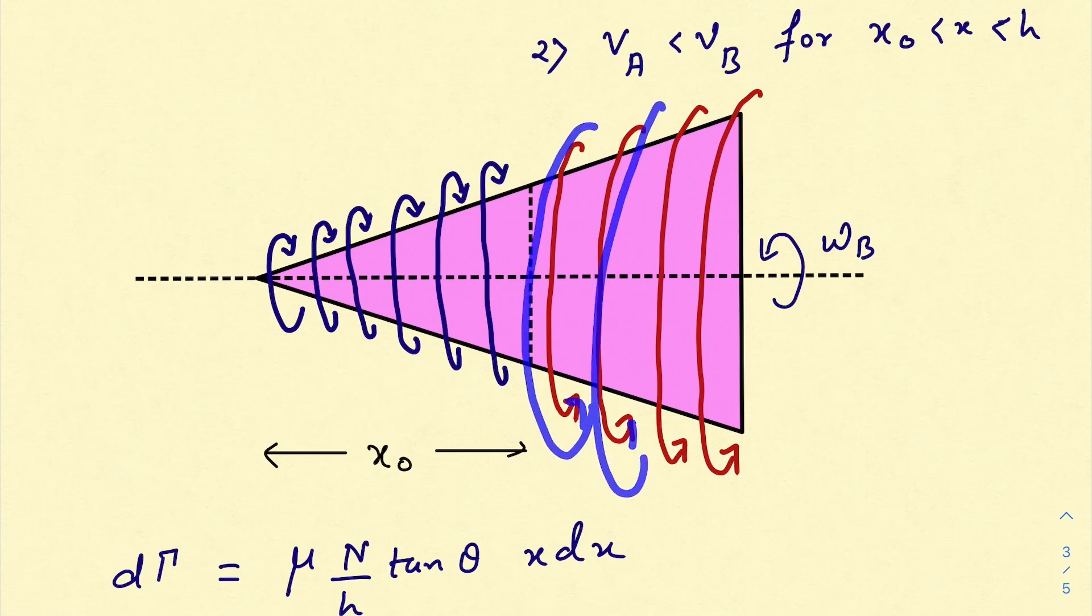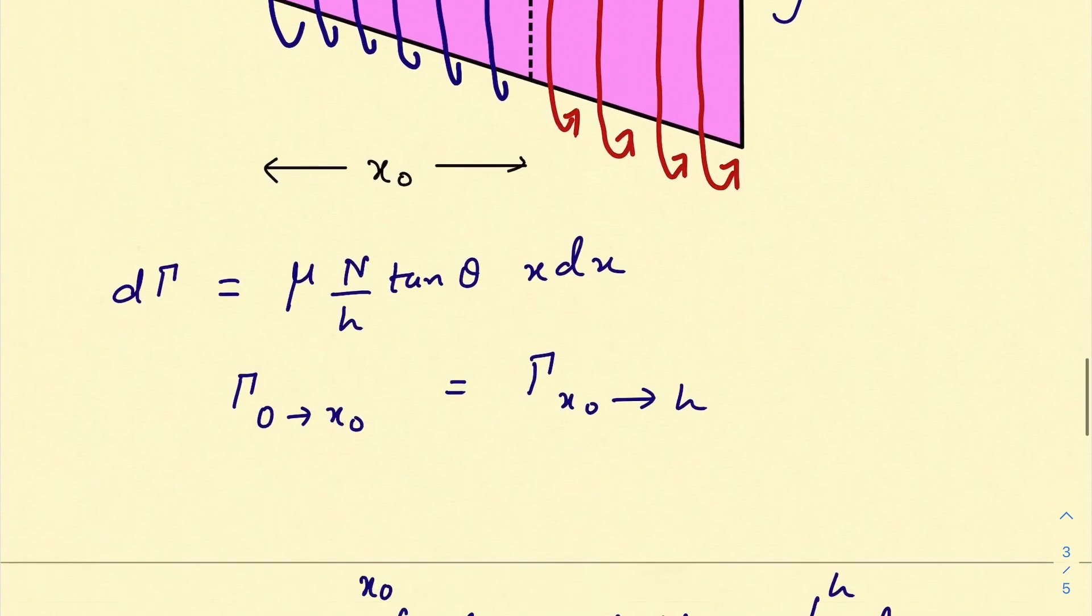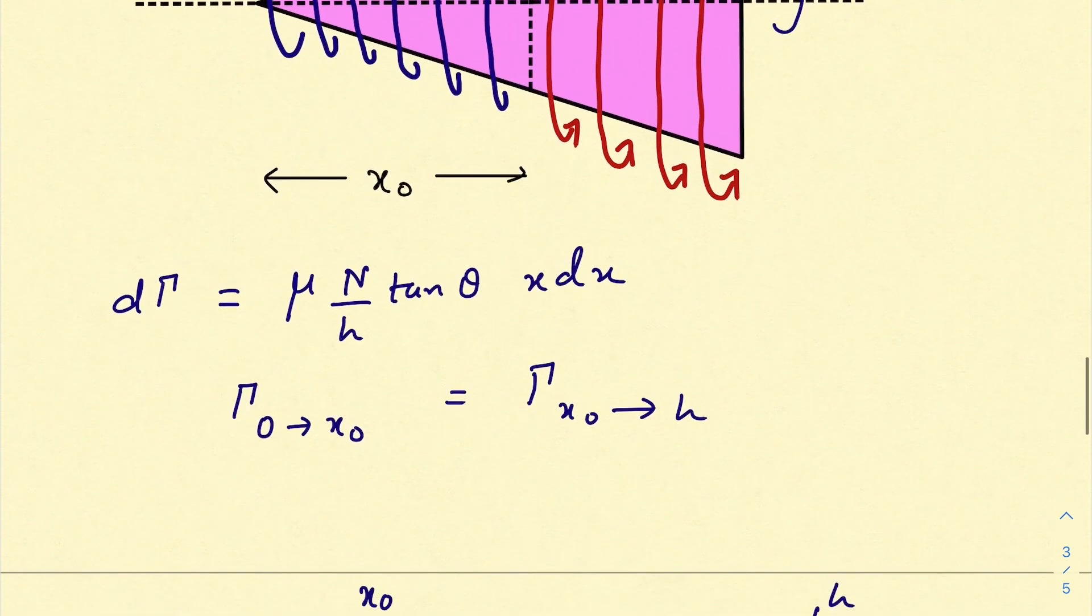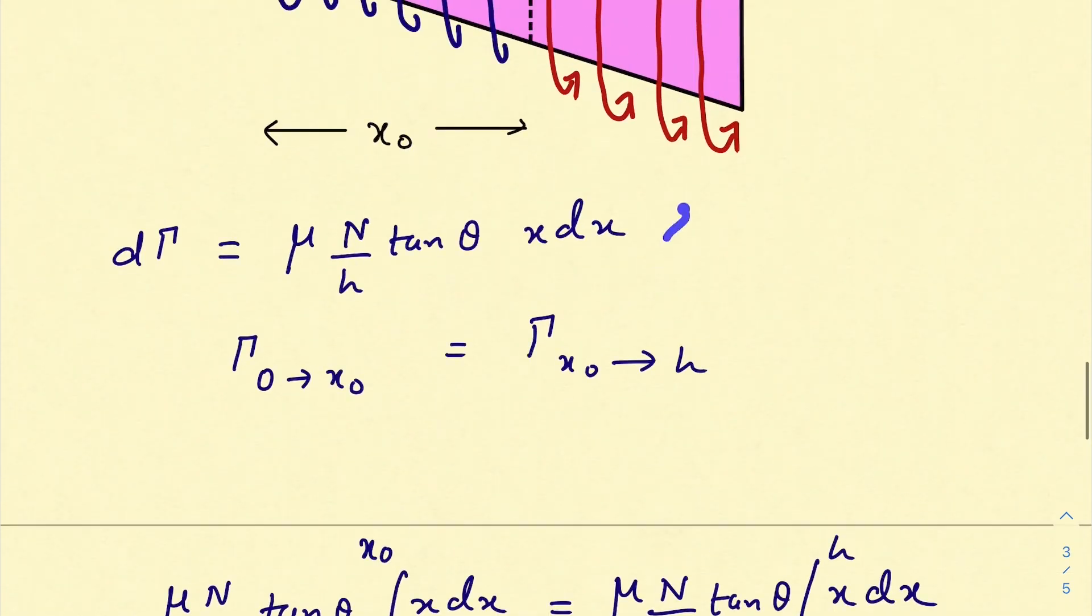In steady state, the torque on both this portion should be equal and opposite. So if I write that the torque from x equals 0 to x equals x_0 would be equal to torque from x_0 till h, so as we already have this differential form for torque, we can just integrate it.